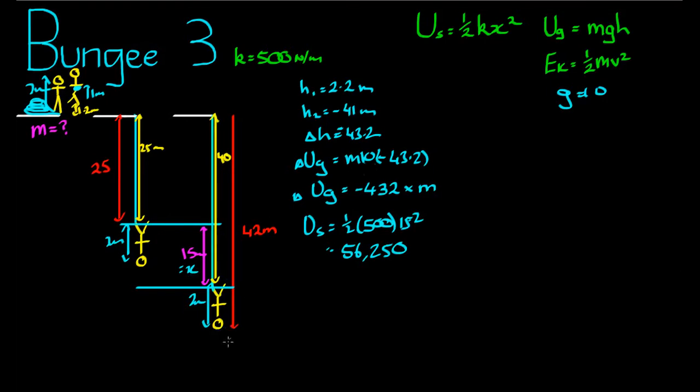Since the person down here is stationary, that must also equal the change, or the magnitude of the change, in the gravitational potential. So 56,250 is equal to 432 times the mass. So if I divide 56,250 by 432, I should get the mass of the person, and it comes to a total of 130.2 kilograms. Is that obese? Depends on the height. For most normal heights, that's obese.